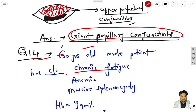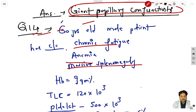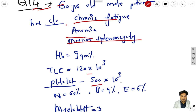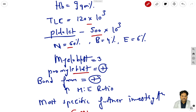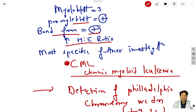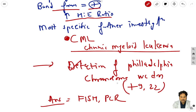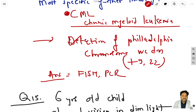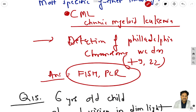Question 14: a 60-year-old male presents with chronic fatigue, anemia, and massive splenomegaly. Hemoglobin 9, TLC 120, platelets 500, neutrophil 60%, basophil 4%, eosinophil 6%, myeloblast 3%, pro-myeloblast positive, band form positive, increased H:E ratio. This is indicative of CML. The most specific investigation is detection of Philadelphia chromosome t(9;22) - so FISH and PCR are the investigations of choice.